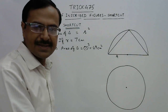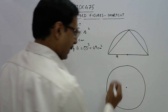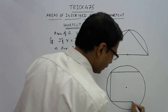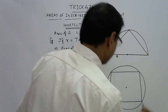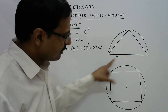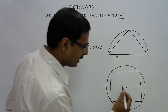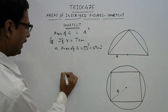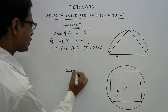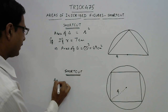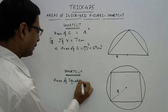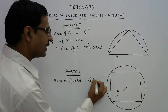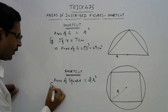Now for the second shape — in this circle I am going to inscribe a square. This is a square inscribed in a circle. If I know the radius of the circle, which is r, the shortcut for finding the area of the square is directly twice r squared — 2r².